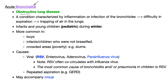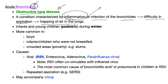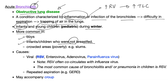Acute bronchiolitis is an obstructive lung disease — a condition characterized by inflammation or infection of bronchioles, leading to difficulty of expiration — that's the definition of obstructive lung disease — leading to air trapping, which increases residual volume and total lung capacity. It happens to infants and young children, especially during winter, and is more common in boys and infants who were not breastfed.